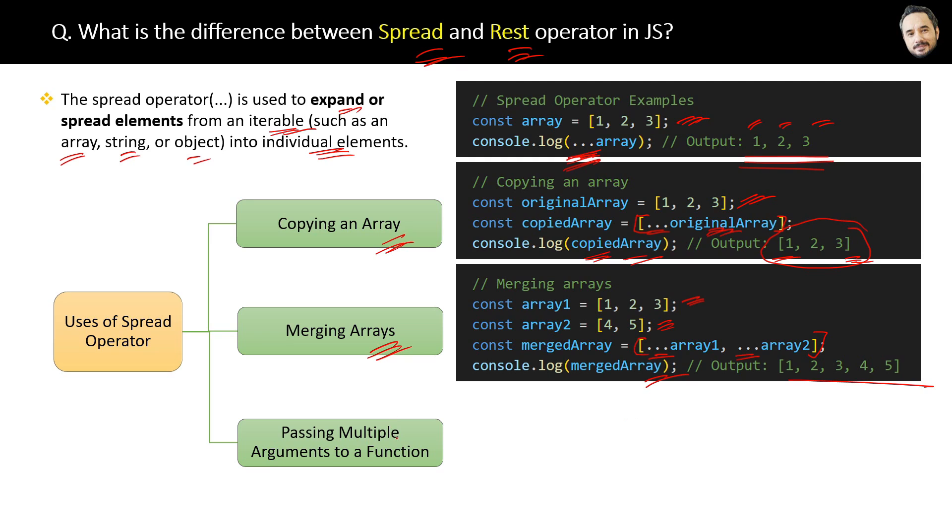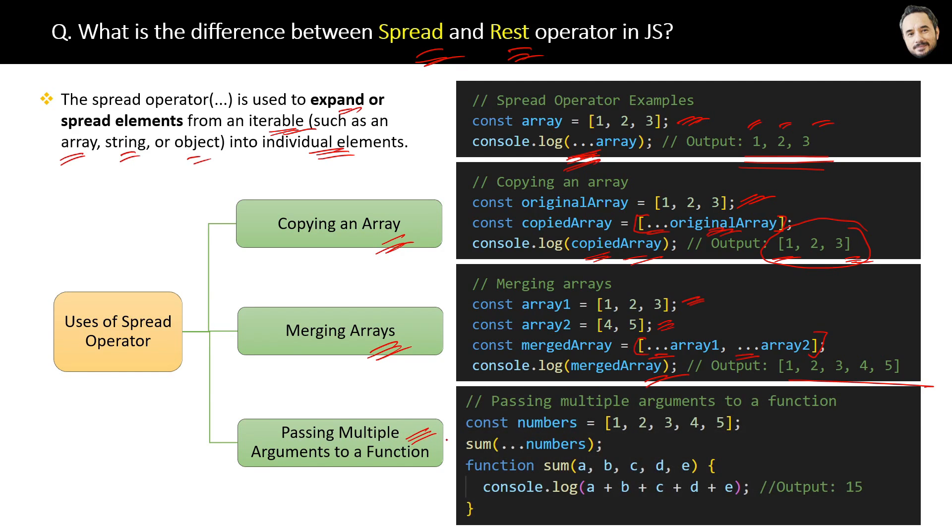The last use of spread operator is passing multiple arguments to a function. Suppose you have an array with multiple elements like this. Then while calling the function, you can pass this array with the spread operator, and in the function body you can receive the individual elements sent by this spread operator.